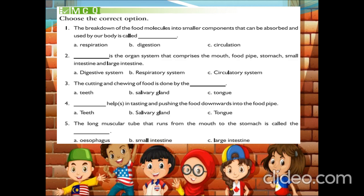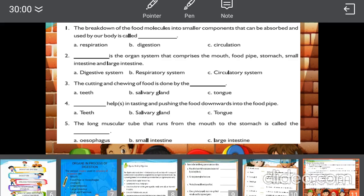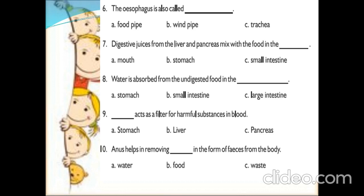Fifth question: 'The long muscular tube that runs from the mouth to the stomach is called?' — esophagus. The esophagus is also called the food pipe. Next: 'Digestive juices from the liver and pancreas are mixed with food in which organ?' — small intestine. 'Water is absorbed from undigested food in which organ?' — large intestine. 'Which organ acts as a filter for harmful substances in the blood?' — the answer is liver.